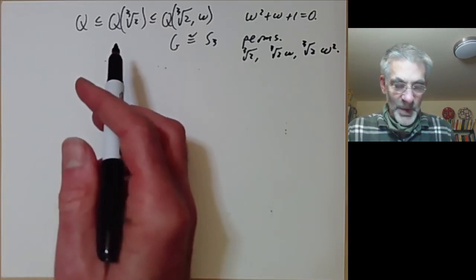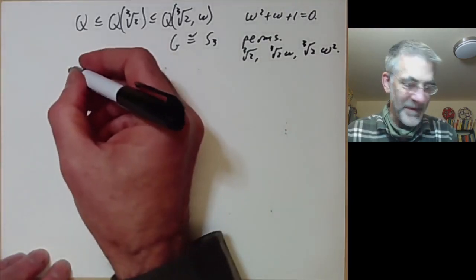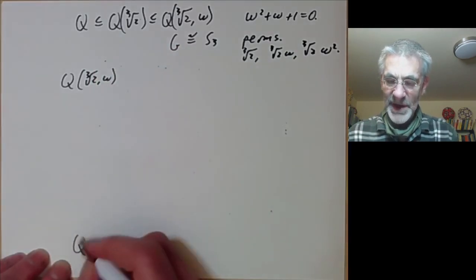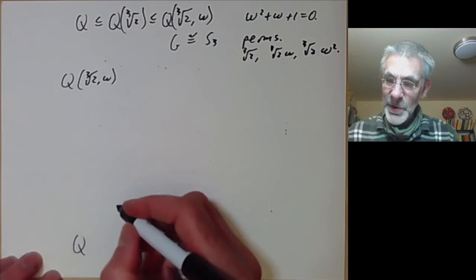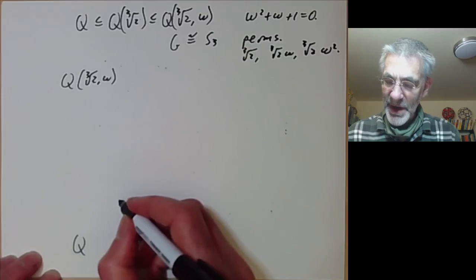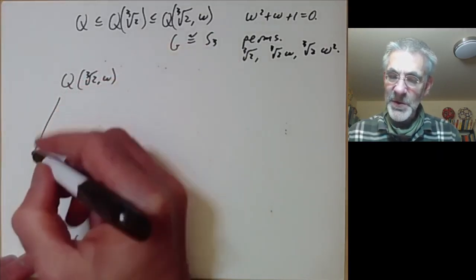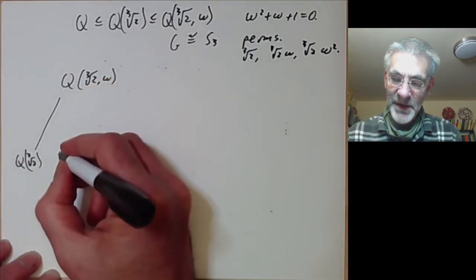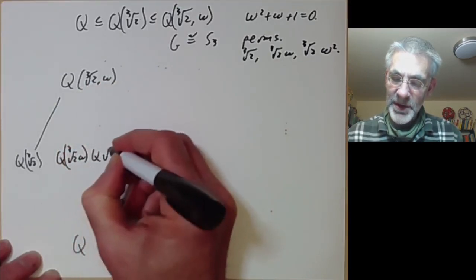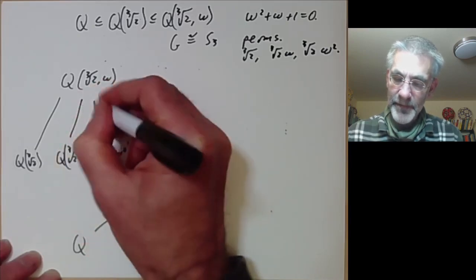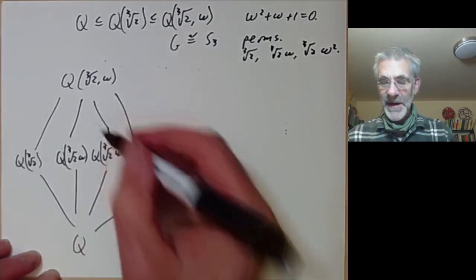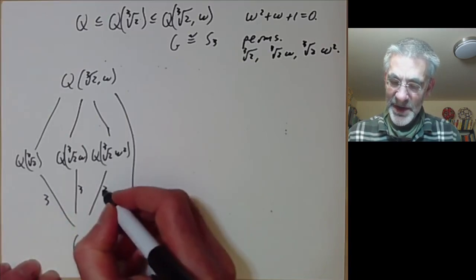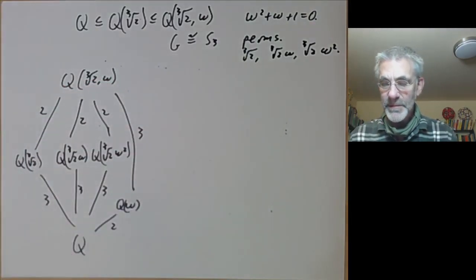I'm going to write out all the subfields and all the subgroups. For the fields: at the top we have Q(∛2, ω); at the bottom we have Q. In between there is a degree-2 extension generated by ω, a degree-3 extension generated by ∛2, and two other degree-3 extensions generated by ∛2·ω and ∛2·ω². The relative degrees between these fields are as shown.